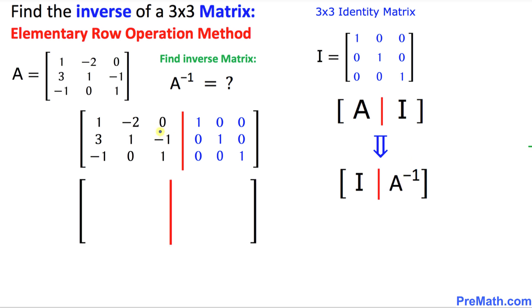Now in our very first step, we are going to make this negative 1 as 0. Wherever I put a circle, that means I want to make that entry as 0. How we can make it a 0? By just putting the row 2 plus row 3. We are just adding row 2 and row 3 and putting